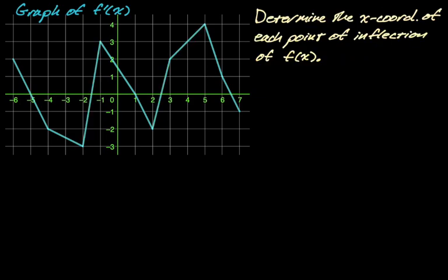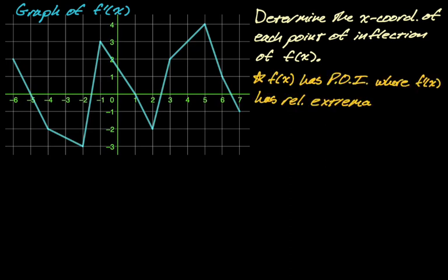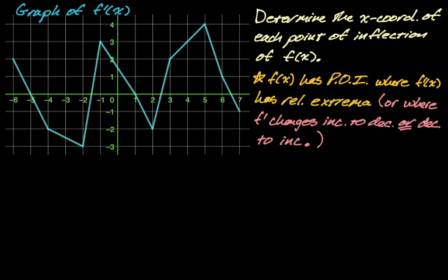Same graph: determine the x-coordinate of each point of inflection of f of x. There were two ways to describe this. My preferred way is that f of x has a point of inflection where f prime has a relative extrema — that's the least amount of writing. The alternative is to say f prime changes from increasing to decreasing or decreasing to increasing, but that requires more writing at each point.